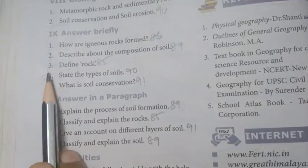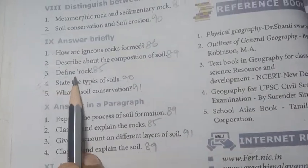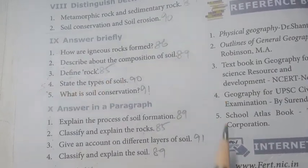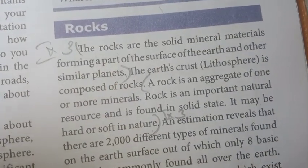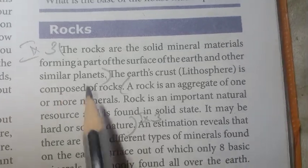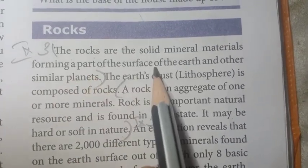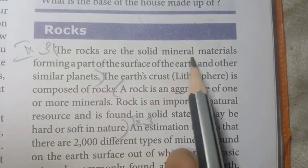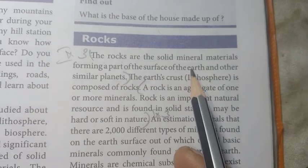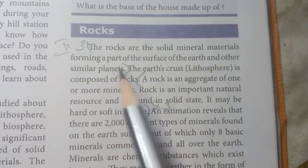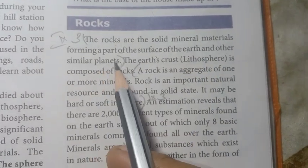Question number 3: Define rock. Page number 85. Rocks are solid mineral materials forming a part of the surface of the earth and other similar planets.